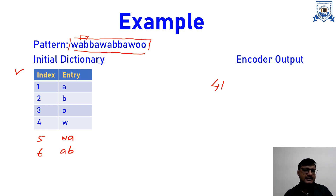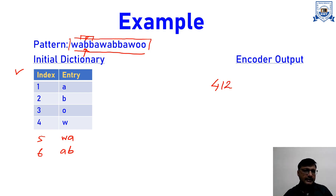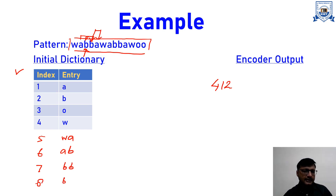Next is B. B is already in the dictionary, so we consider two letters — BB. BB is not there, so we send the index of B which is 2, and add BB to the dictionary at index 7. Then we move ahead and again consider B. B is already there, so we consider B and A. BA is not there in the dictionary, so we make an entry at index 8 as BA, and send the index of B again which is 2.